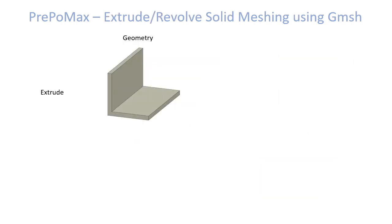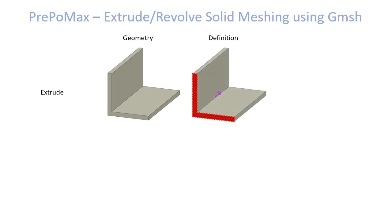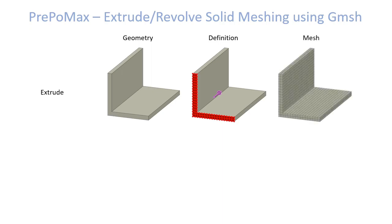The last feature I will talk about are extruded and revolved meshes. If a geometry was created by extrusion, it can be meshed by an extrude mesh procedure. The user needs to select a base surface and PrePoMax will recognize the extrude direction and depth. The user then defines the base surface meshing properties — which algorithm and element size will be used — and the mesh can be created. In this case a nice hexahedral mesh was obtained.